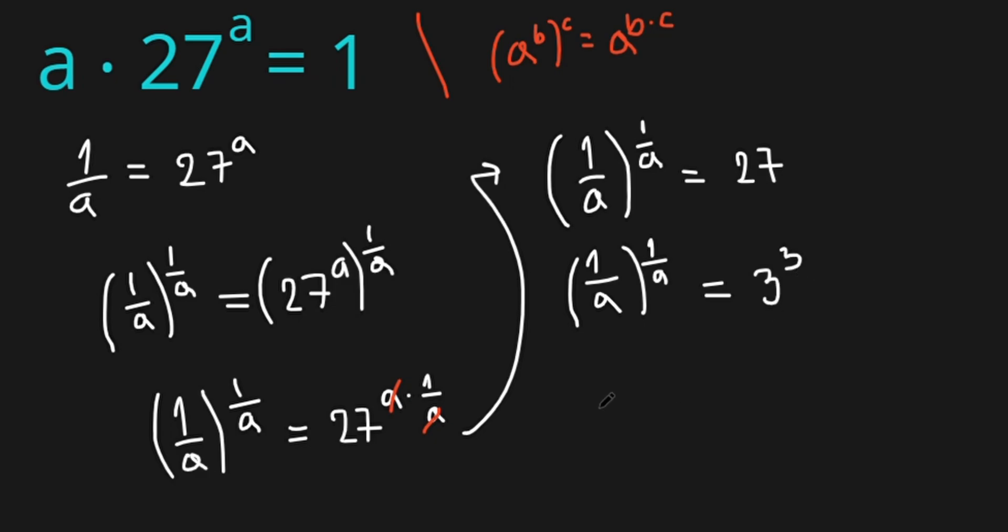From this we can see that 1 over a equals 3. So this means a equals 1 divided by 3, and this is our result.